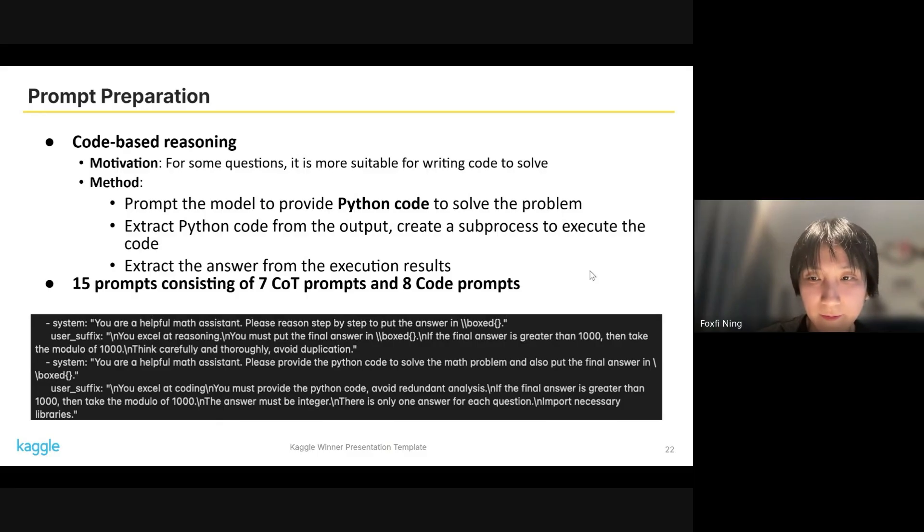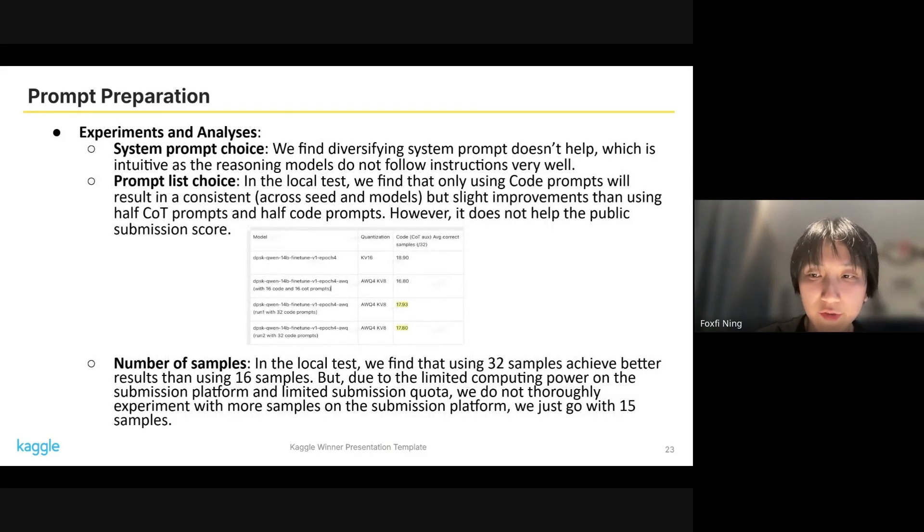Here are some results on prompt preparation. For system prompt choice, we found that diversifying system prompts does not help, which is expected and intuitive, as reasoning models do not follow the system prompts and instructions very well. For prompt list choice, in our local test, we found that only using code prompts will result in a consistent but slight improvement than using half COT prompts and half code prompts. However, it does not help the public submission score, so we just used our half COT and half code prompt list.